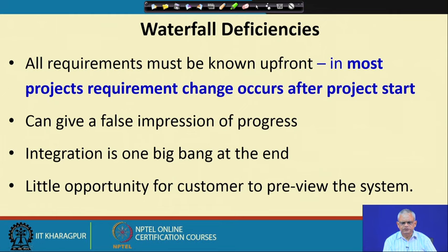Possibly the most problematic deficiency is that the requirements must be known upfront. The customer has to give all the requirements before the project starts, and that is usually not feasible, because the software is not there yet and the client has to imagine what is required. It is very easy to miss requirements, give ambiguous requirements, or wrong requirements. Normally, only when the user sees the software do they say that this is not what they wanted.